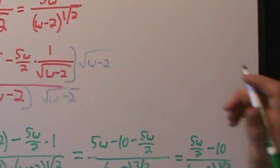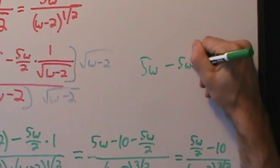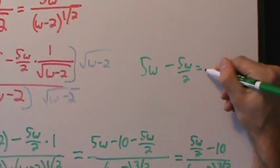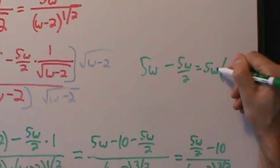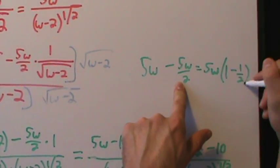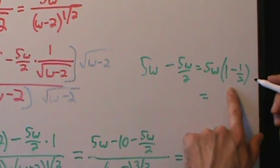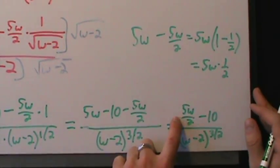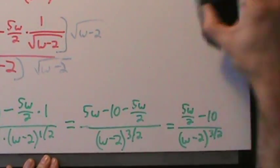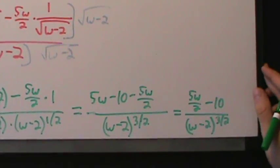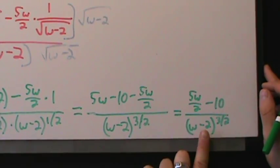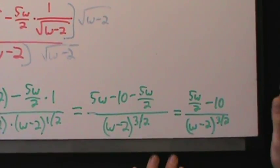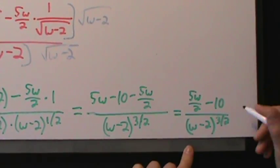Simplifying the numerator: 5w minus 10 minus 5w over 2. Now 5w minus 5w over 2 — pulling out 5w gives 5w times (1 minus 1/2) = 5w times 1/2 = 5w over 2. So the numerator becomes 5w over 2 minus 10. The first derivative is: z prime equals (5w/2 minus 10) divided by (w minus 2) to the 3 halves.